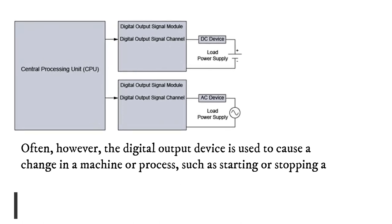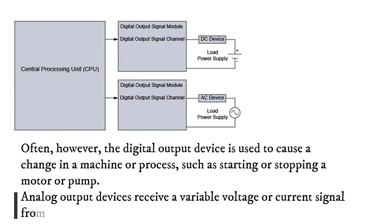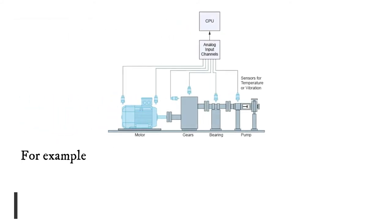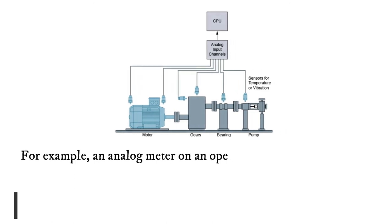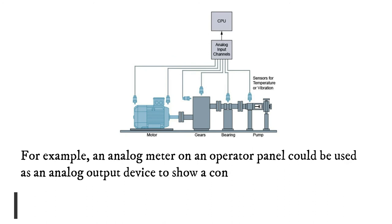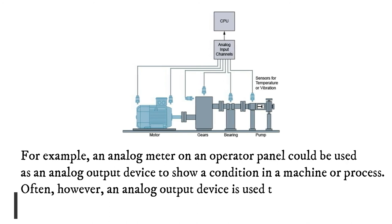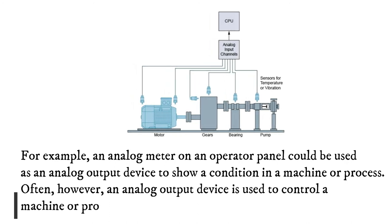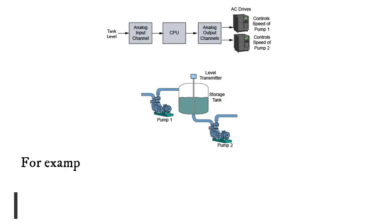Analog output devices receive a variable voltage or current signal from an analog output signal module. For example, an analog meter on an operator panel could be used as an analog output device to show a condition in a machine or process. Often, however, an analog output device is used to control a machine or process.